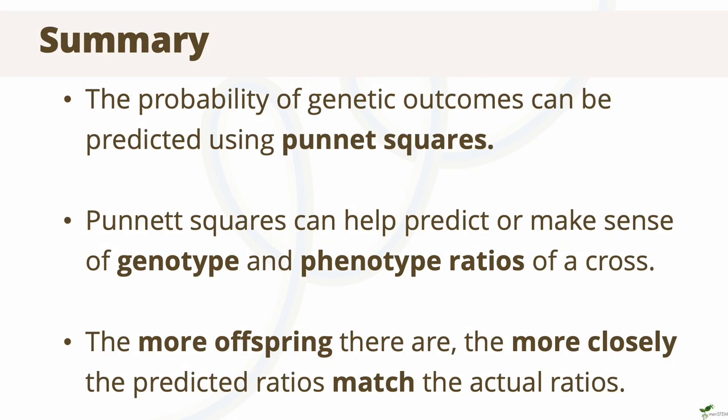In summary, within this video we covered that Punnett squares are a predictive tool used to calculate the probabilities of different genetic outcomes from crossbreeding. From these Punnett squares, we can also generate genotype and phenotype ratios. We also looked at the law of large numbers, which demonstrates that the more offspring there are, the closer the predicted ratios match the actual ratios.